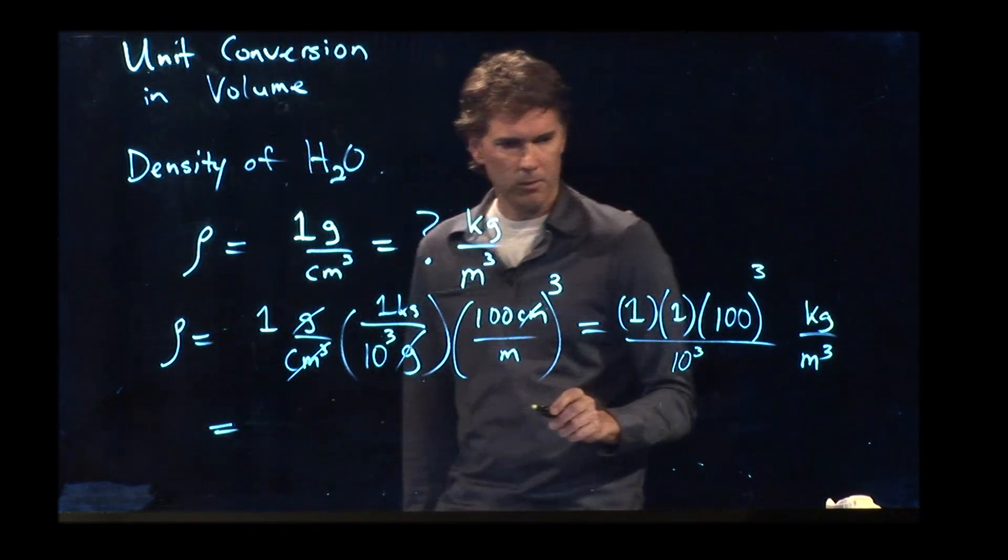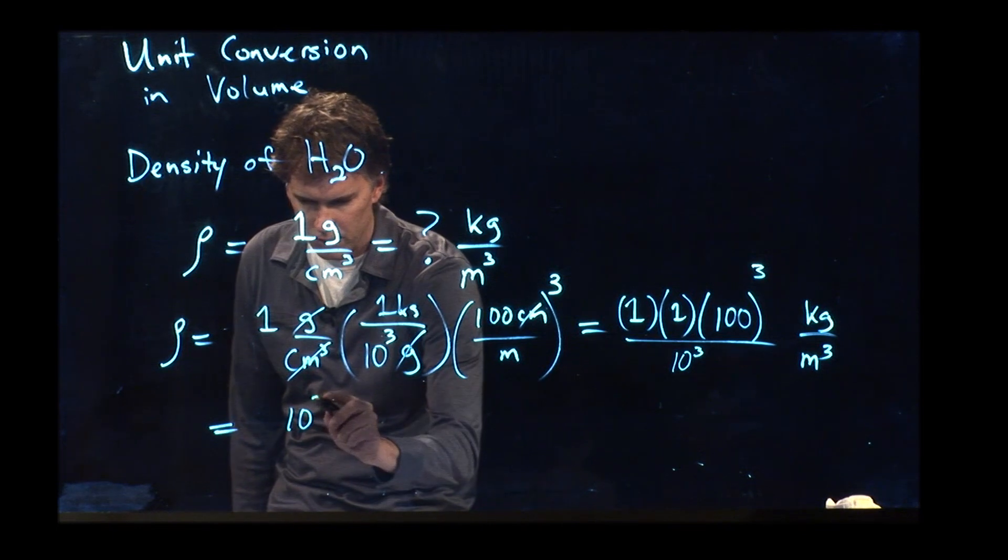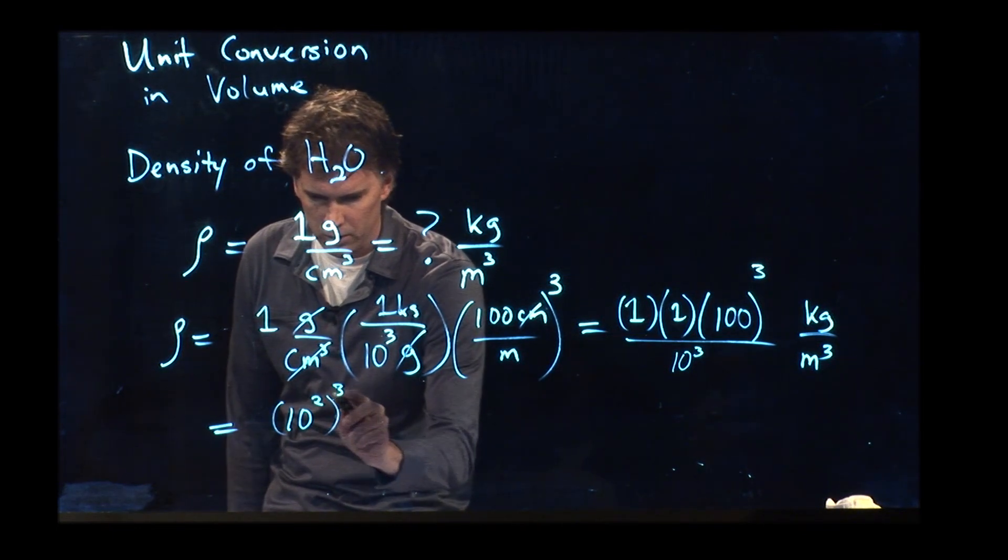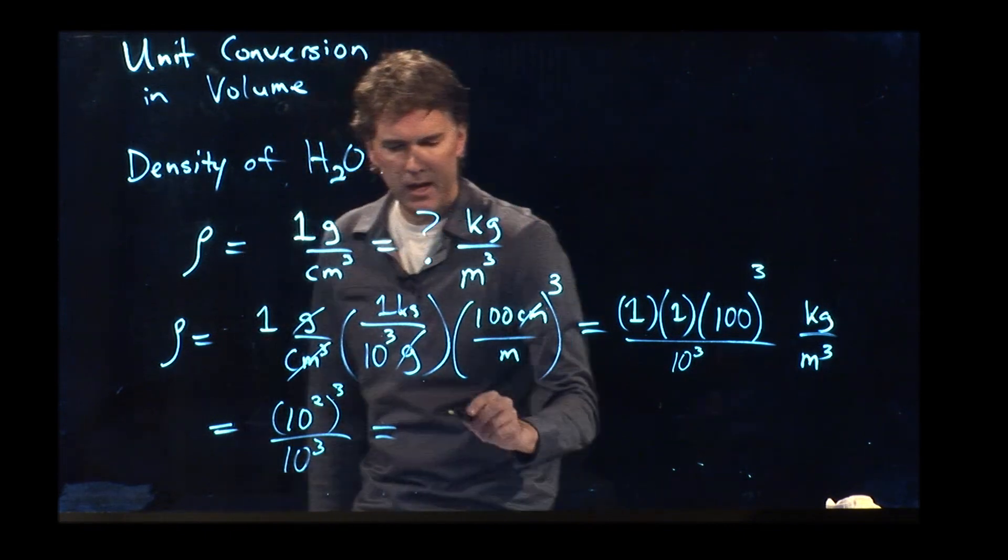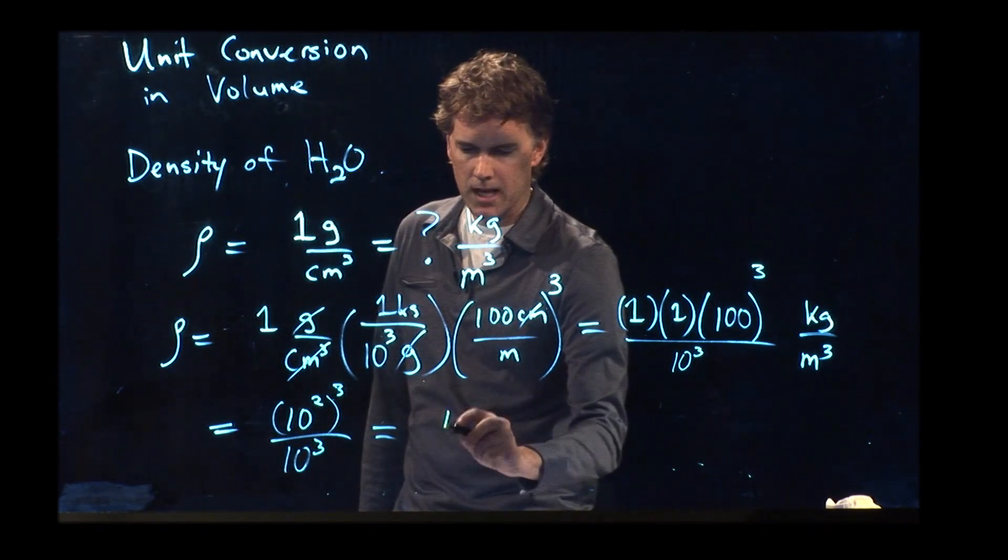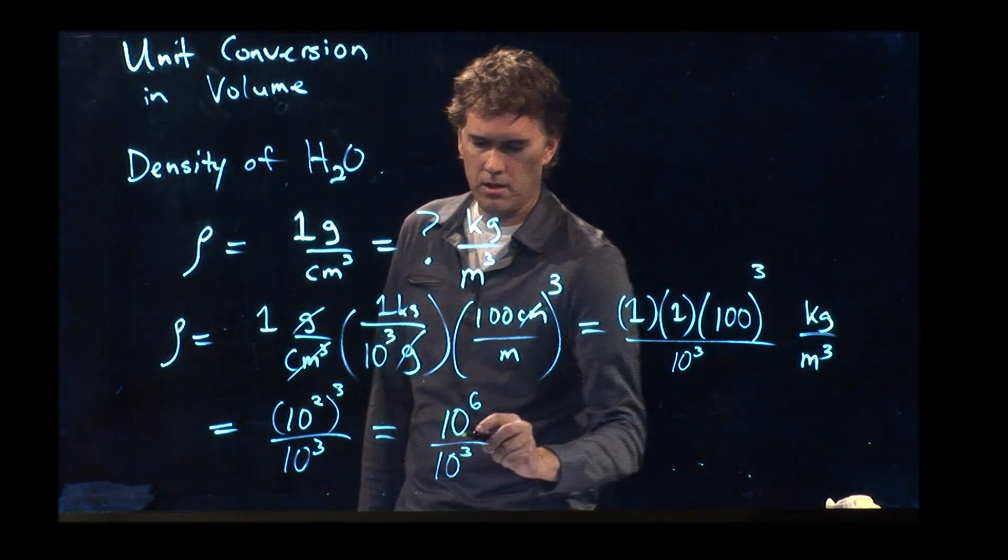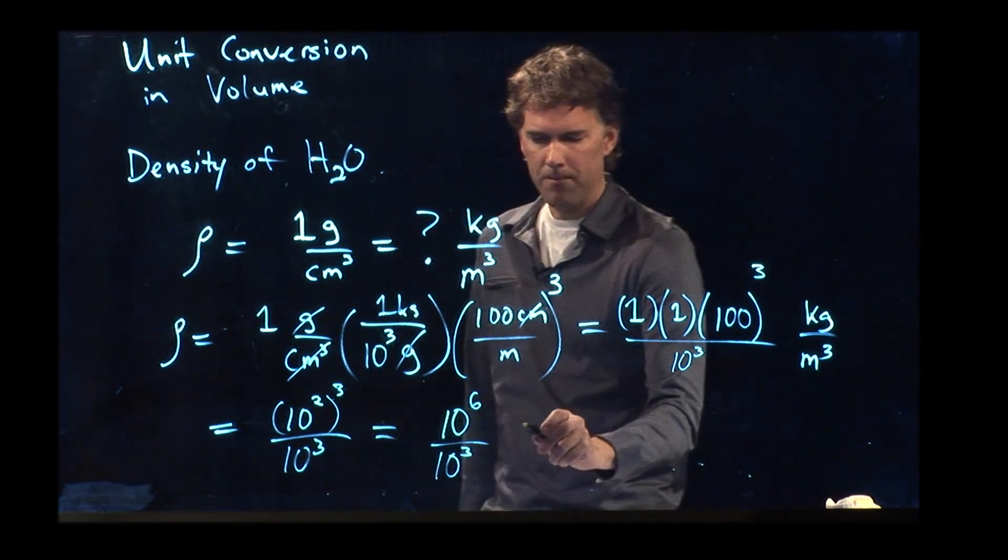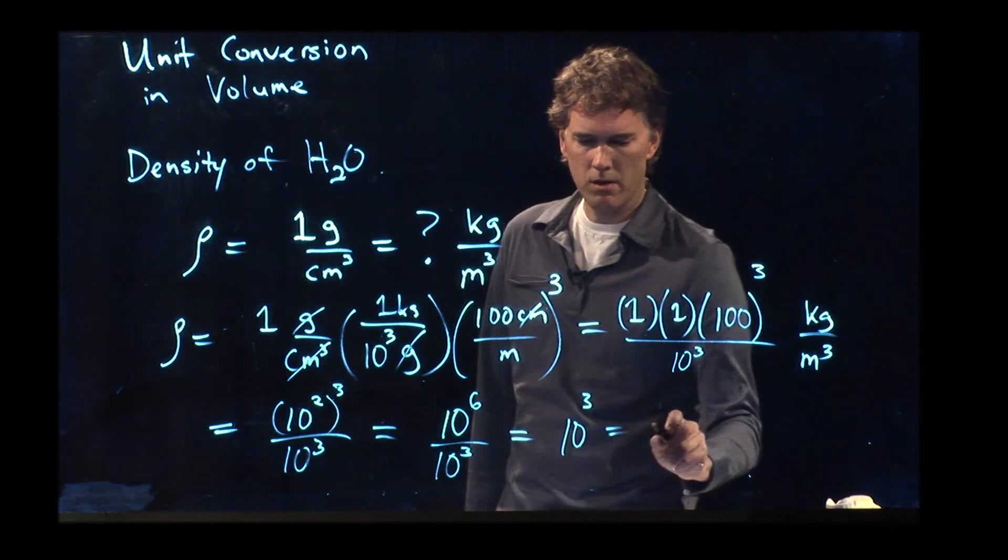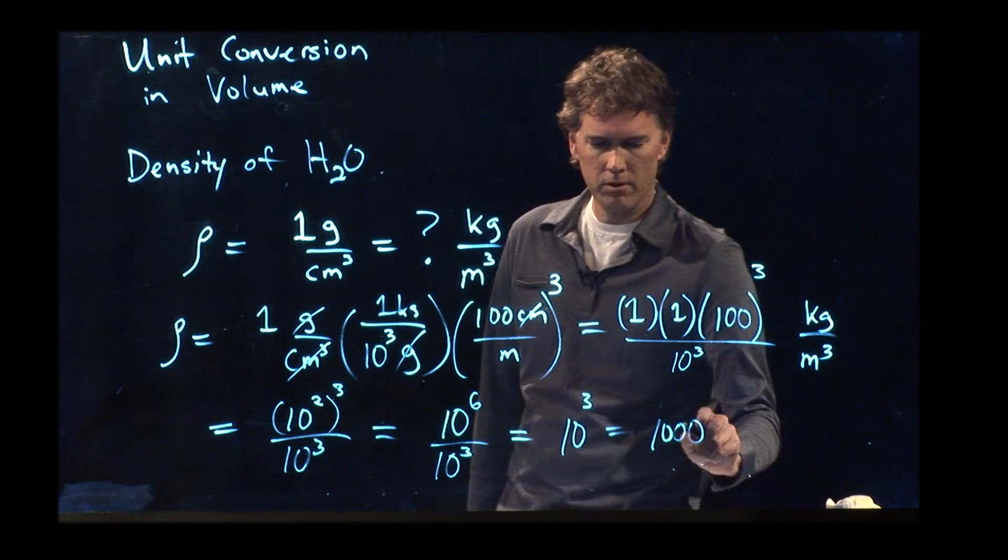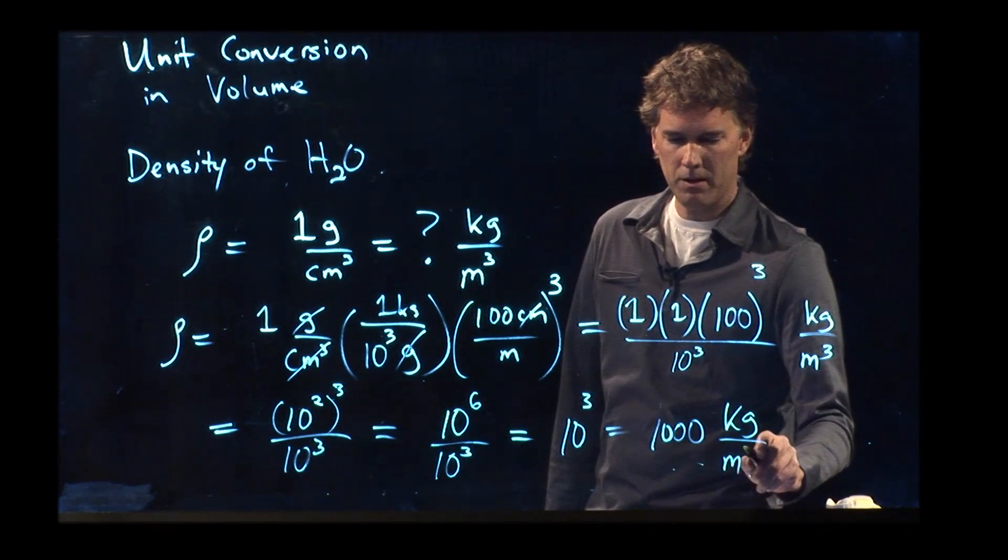What do we get? A hundred cubed is the same as ten to the two cubed. We have ten to the three in the bottom. If I take ten to the two and cube it, it becomes ten to the six. I divide by ten to the three and get ten to the three, which is one thousand kilograms per cubic meter.